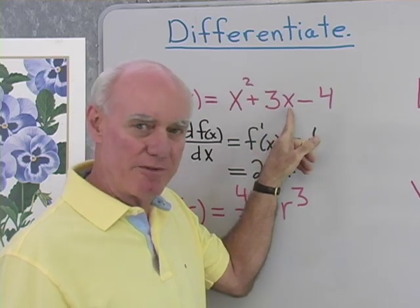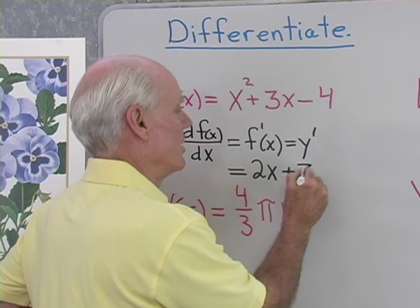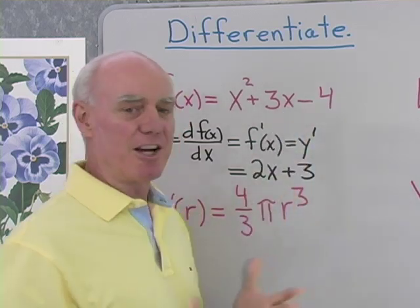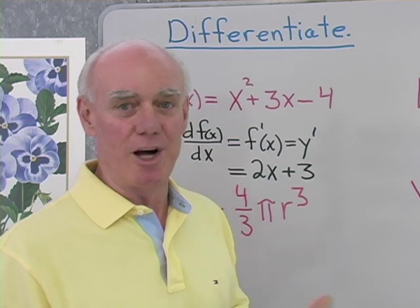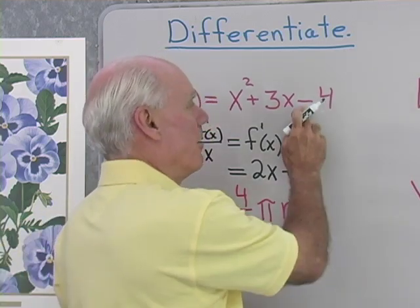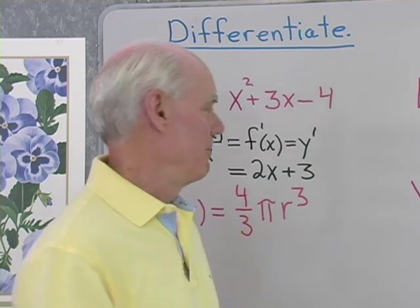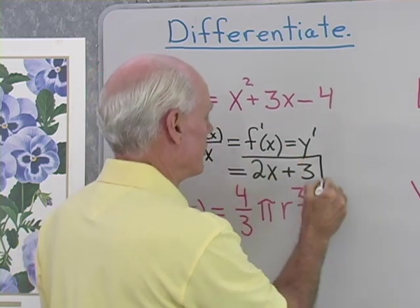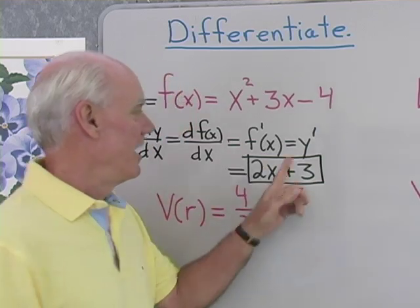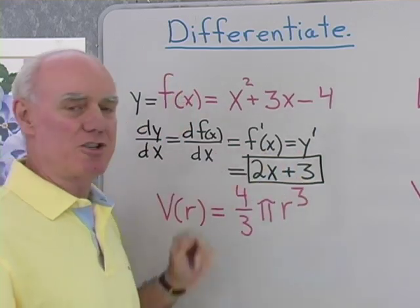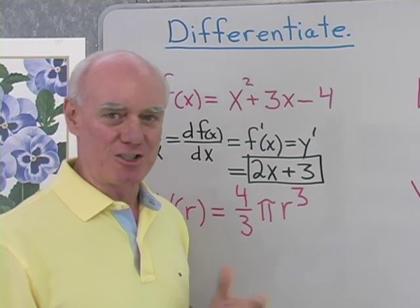it's that constant times the derivative of that function of x. So 3 times the derivative of x with respect to x, which is just 1. So I'll just write that as 3 minus the derivative of that constant, which is 0. So there's my derivative, 2x plus 3. And I can use any of these notations right here to represent it. Let's look at our next problem.